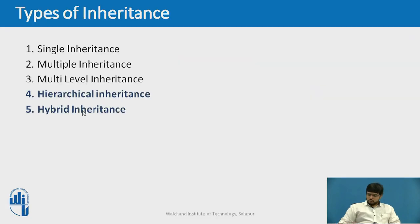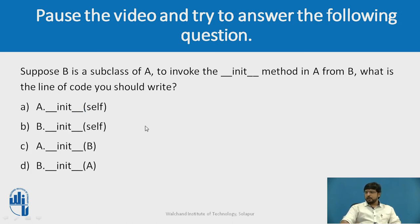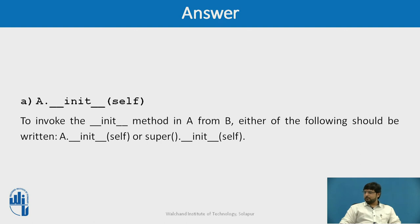So try to answer this question: suppose B is the subclass of A. To invoke the constructor method of A from B, what line of code should be written — is it A, B, C or D? The correct option is A. To invoke the constructor of A from B, either call A's constructor directly or use the super method from the derived class.